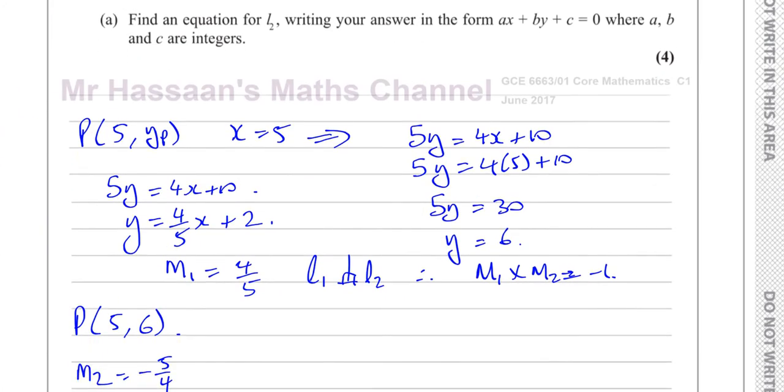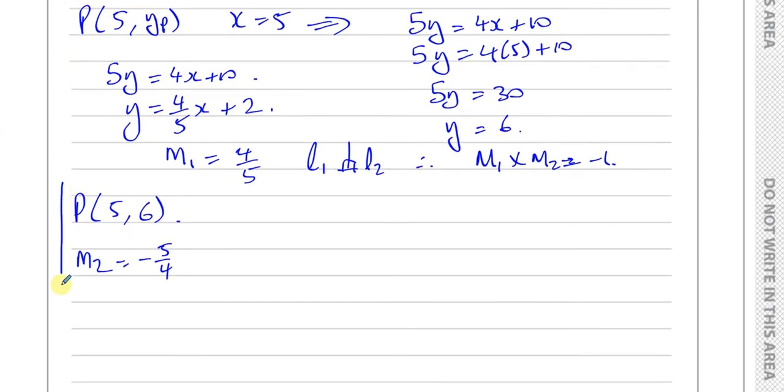Therefore, the gradient of line 2 is perpendicular. Line 1 and line 2 are perpendicular, so we can say that line 1 gradient times line 2 gradient is equal to negative 1. They are negative reciprocals. So the gradient of line 2 is going to be minus 5 over 4, the negative reciprocal of line 1. So now we have the two things that we need to find the equation of a straight line.